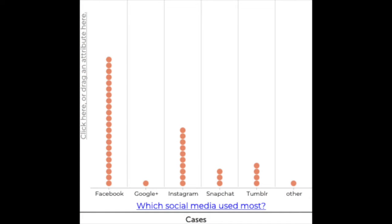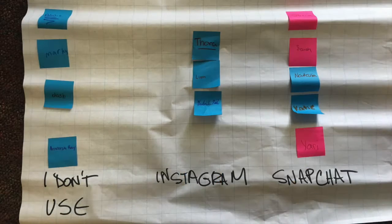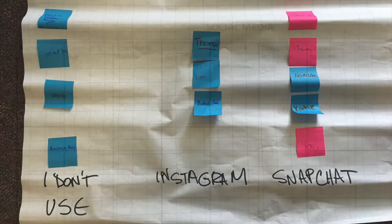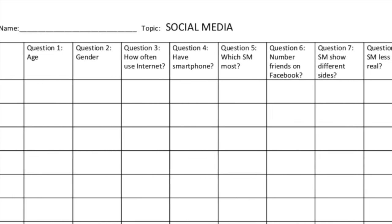Our first module used data from the Pew Institute about how teens use technology, such as video games and social media. Participants were shocked to discover that Facebook was the most popular platform according to Pew, until they learned that the Pew data were collected in 2014. So they collected their own data to compare to the Pew data.